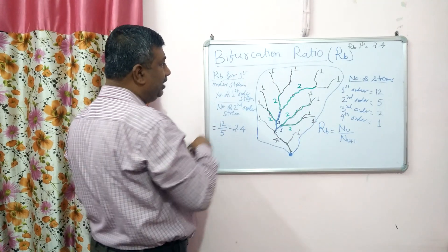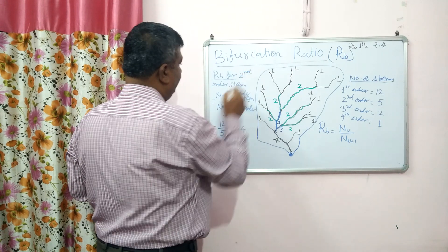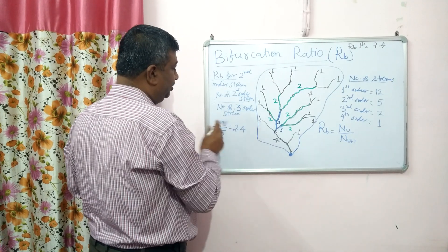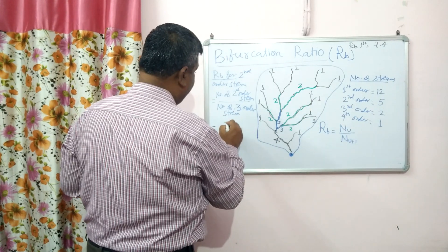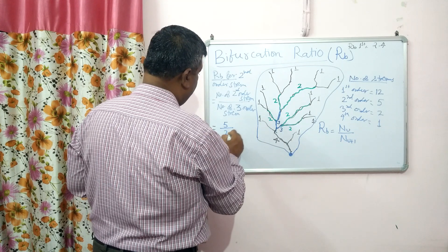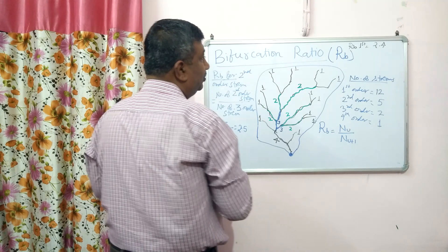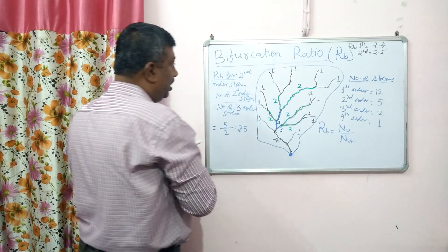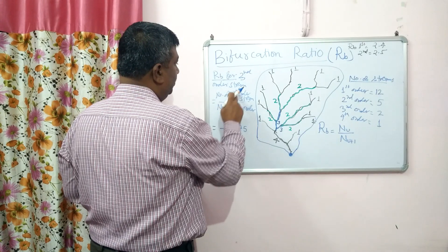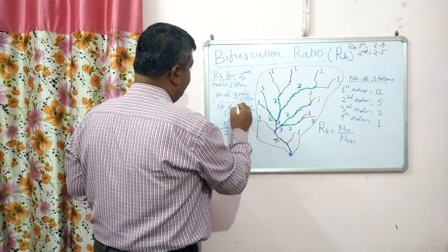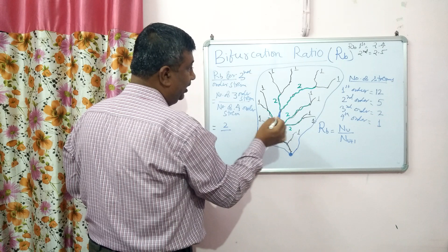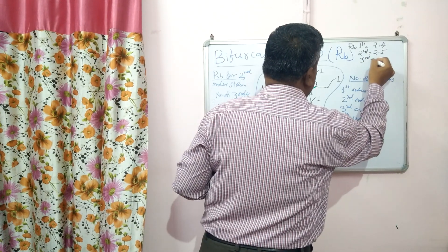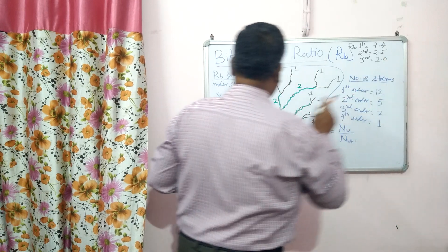Similarly, Rb for second order stream: number of second order streams divided by number of third order streams = 5 divided by 2 = 2.5. So Rb for second order is 2.5. Rb for third order: number of third order streams divided by number of fourth order streams = 2 divided by 1 = 2.5. So Rb for third order is 2.5.